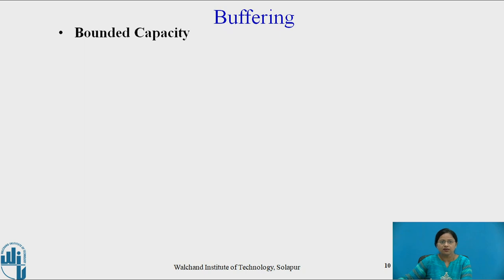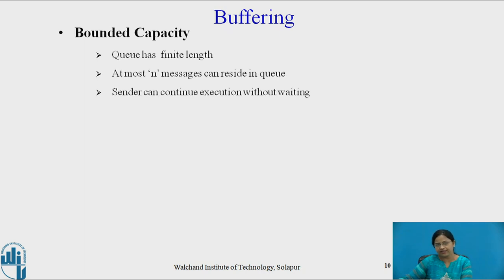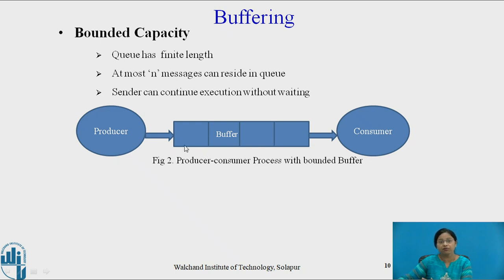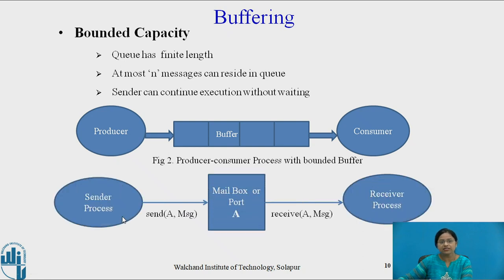The next type is bounded capacity: the queue has a finite length and at most n messages can reside in it. The sender can continue execution without waiting. An example is the producer-consumer process with a bounded buffer — the producer produces an item if space is available, the consumer consumes an item if an item is available, the producer waits only when the buffer is full, and the consumer waits only when the buffer is empty. Another example is a sender sending to mailbox A and a receiver receiving from mailbox A.